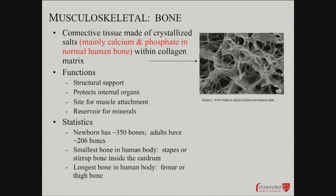We've got about 206 bones. You start with more, but some of them fuse. The smallest bone is the stapes, or stirrup, in your eardrum, and the longest bone is the femur, or thigh bone.